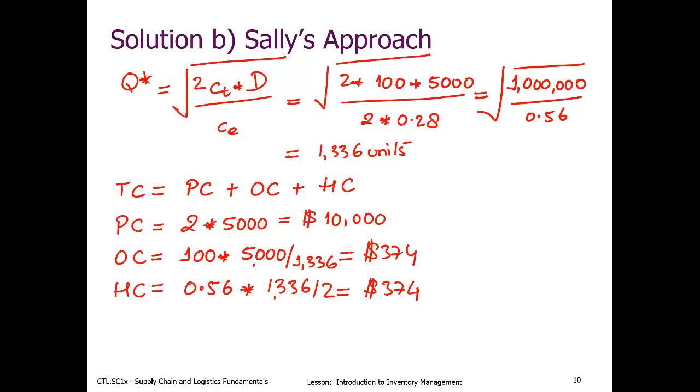So we have the purchase cost, the ordering cost, and the holding cost. Can we calculate the total cost? Yes. You just add these three up, and this should give you a value of $10,748.